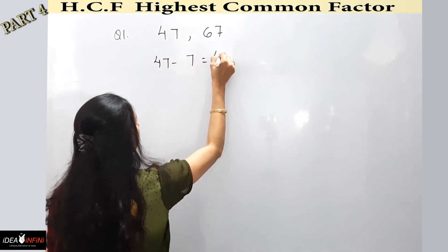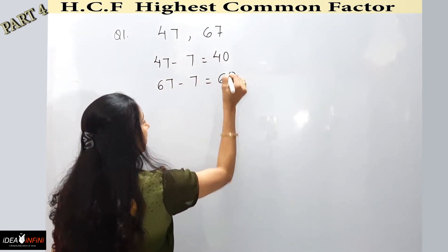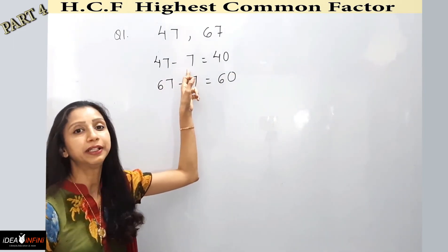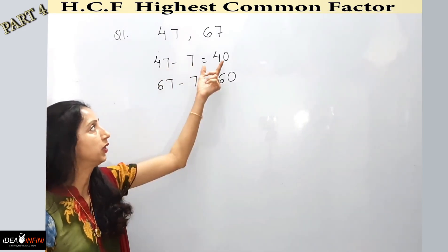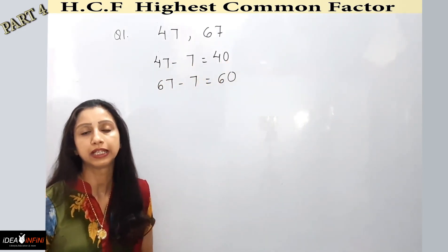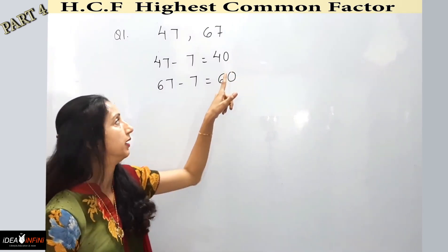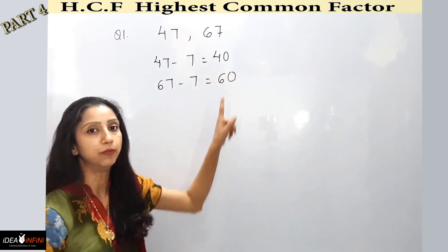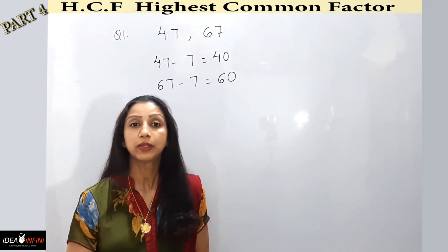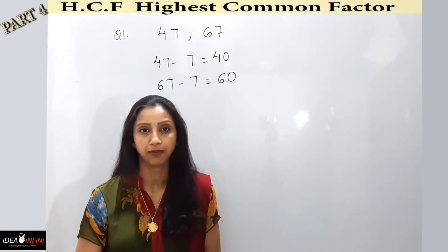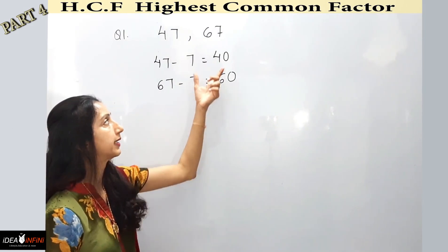47 minus 7 gives me 40, and 67 minus 7 gives me 60. By subtracting the remainder from each dividend, whatever remains is perfectly divisible by the number I'm going to find. Both 40 and 60 are now perfectly divisible by that number, since I've already subtracted the remainder.